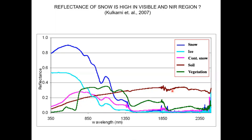We have seen this curve previously. Snow has very high reflectance in the visible band of the electromagnetic spectrum — around 400 to 700 nanometers. When it comes to the SWIR region, around 1550 to 1700 nanometers, snow has very low reflectance. This is a unique characteristic. The key question is: can we exploit this typical characteristic of snow cover, where it has very high reflectance in one satellite band and very low reflectance in another?